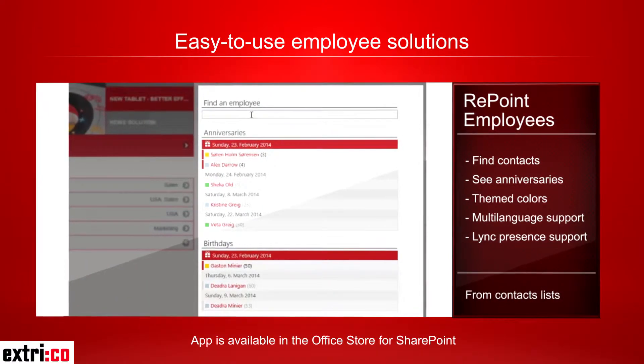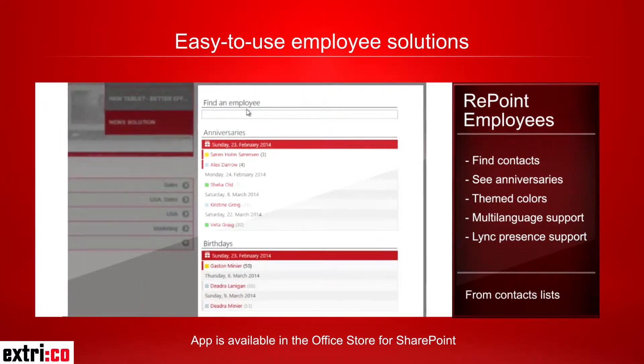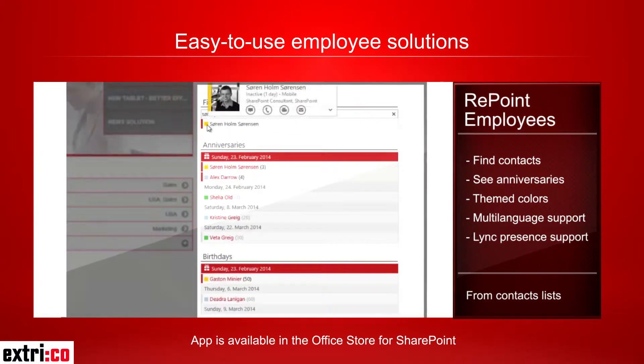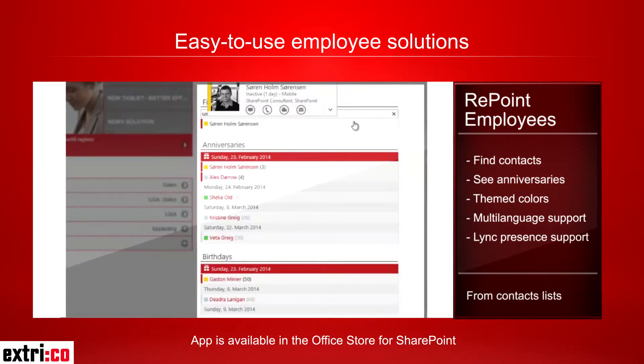To find a person you simply start writing in the search area. And if you have Microsoft Link, it is possible to see the presence and other details of connected contacts.